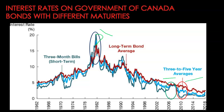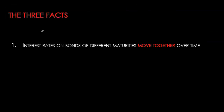Some observations from this data: first, yield curves do not remain the same — they change over time. Second, interest rates tend to move together even on bonds with varying maturities. If short-term rates are rising, intermediate and long-term bond rates are also rising. If yields on short-term bonds are roughly constant, yields on long-term bonds are also moving in the same direction.